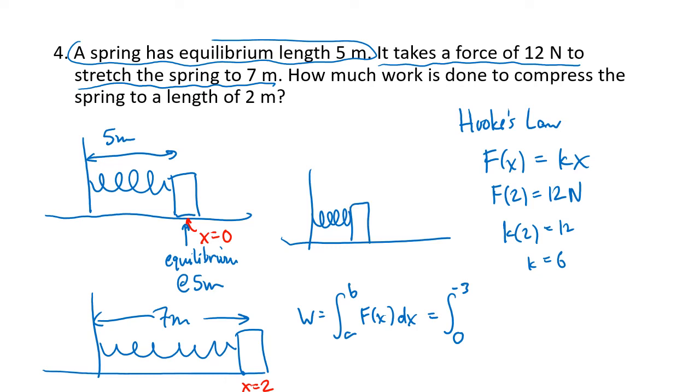So again, the situation would look like this. So I've compressed my spring so that I'm only at a length of 2 meters. Remember, equilibrium was over here at x equals 0, where I had 5 meters length. And so if I'm going from 5 down to 2, I'm moving 3 units to the left. So that's where that negative 3 is coming from.